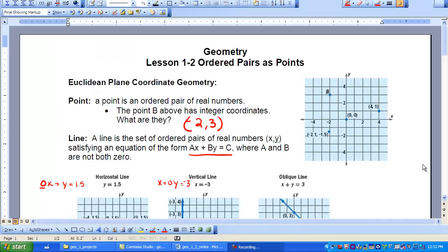This is Geometry Lesson 1-2, Ordered Pairs as Points. In this lesson, we're going to define the point and the line as it pertains to a coordinate plane. First of all, what is a plane?